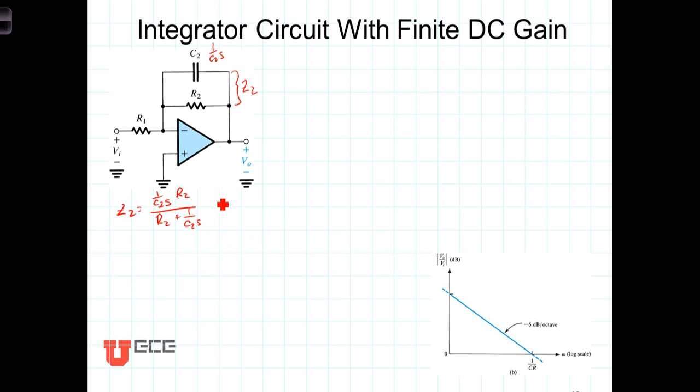Now if we multiply numerator and denominator by C2S, we're able to clear the denominators, and we end up with Z2, the impedance there is just R2 over R2C2S plus 1.